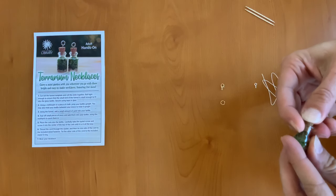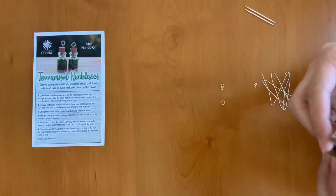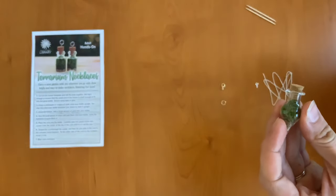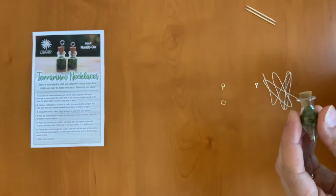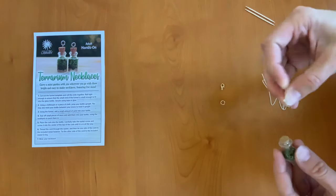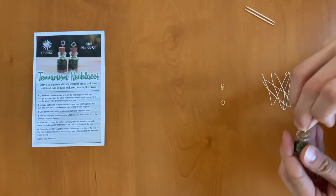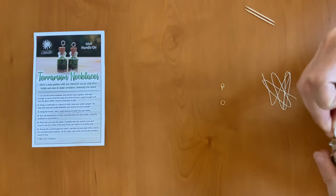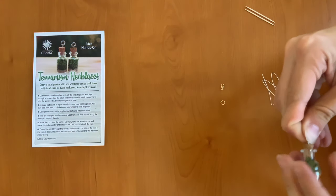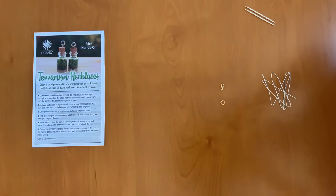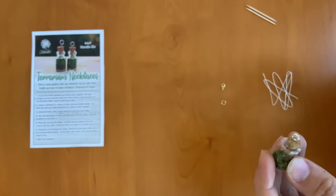We're just going to push that in and you want to push it in kind of gently but also as deep as it will go. There we go. Next we want to take our eyelet screw and right in the center of the top of our cork we're going to gently push and screw it in. You want to push and screw at the same time making sure that you're staying at the center of your cork.